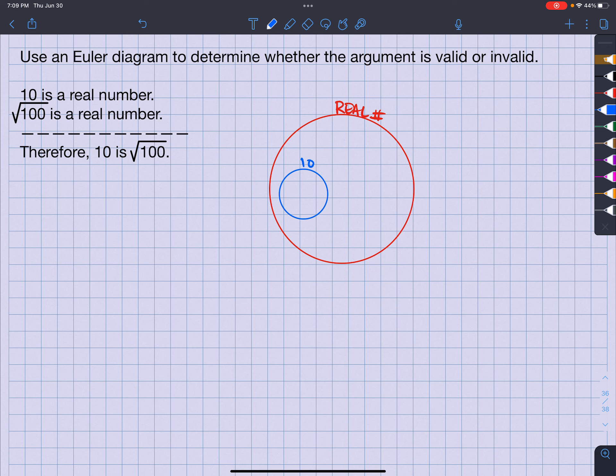Square root of 100 is a real number. There's my square root of 100. It's a real number.